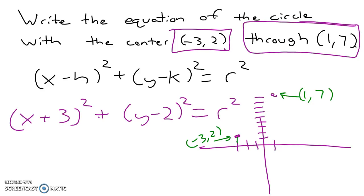Now, the change in x is 4. Then, the change in y is 5. This distance, this radius, can be found. So your radius squared is 16 plus 25. So your radius is the square root of 41.